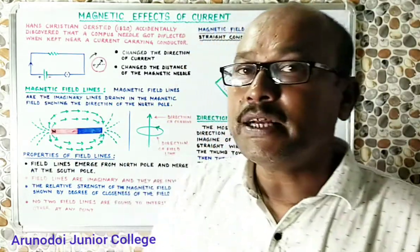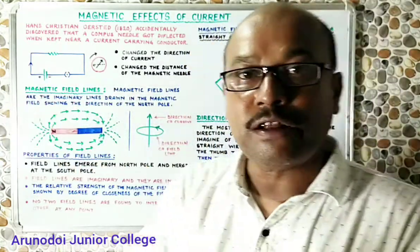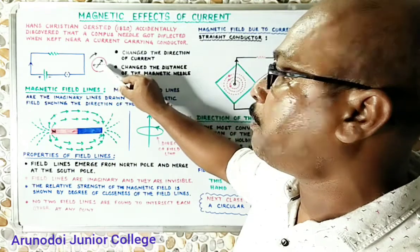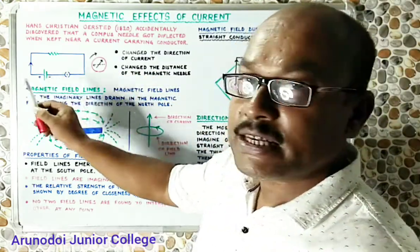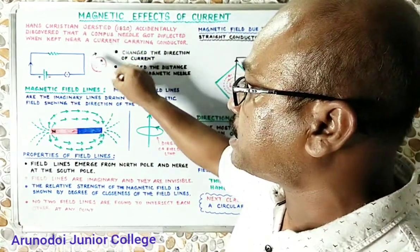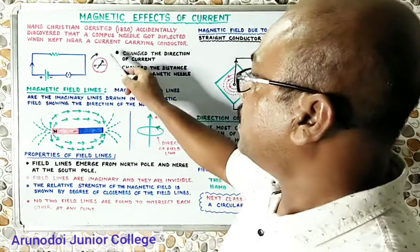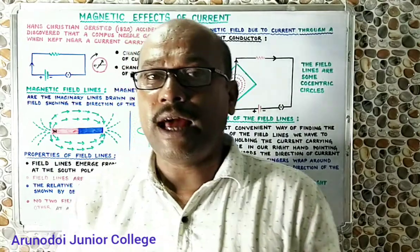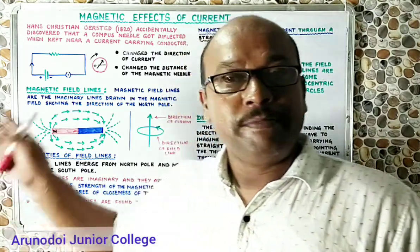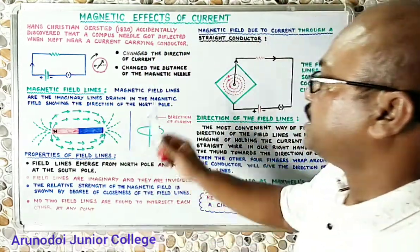He then started the experiment in a more systematic way. He changed the direction of the current in the circuit by reversing the battery. The moment he changed the direction of current, he found that the direction of deflection also changed. If with the positive terminal on the right the deflection was clockwise, reversing the battery made the deflection anti-clockwise. This confirmed that the current-carrying conductor was indeed behaving like a magnet, causing the nearby magnetic needle to deflect.